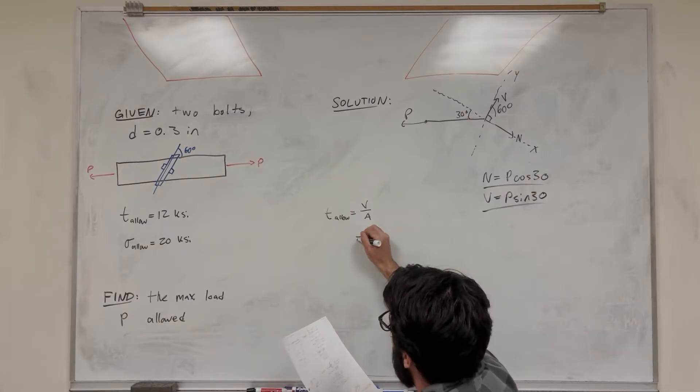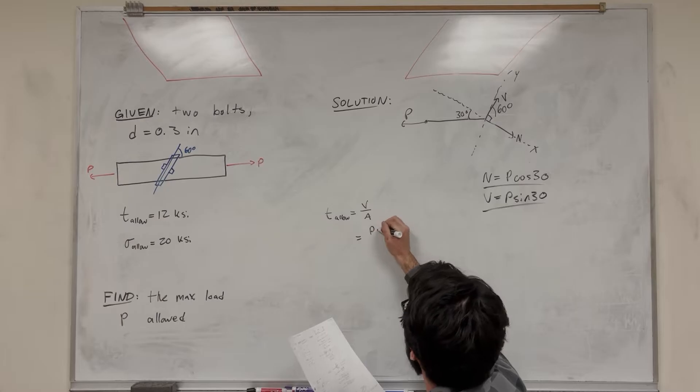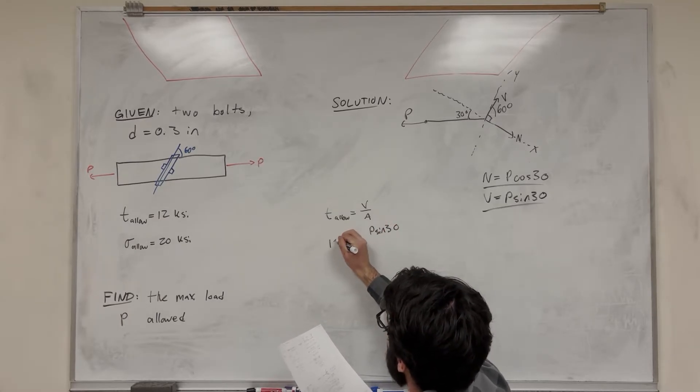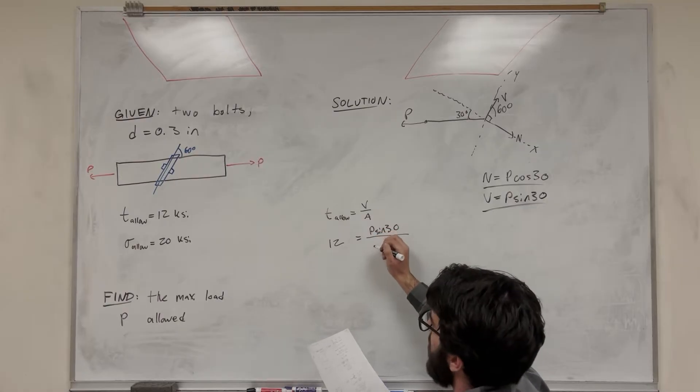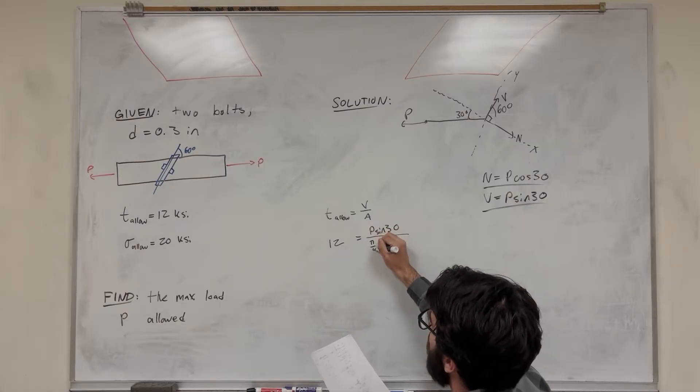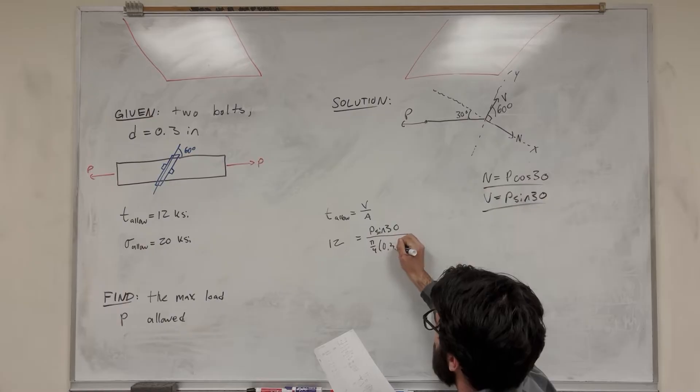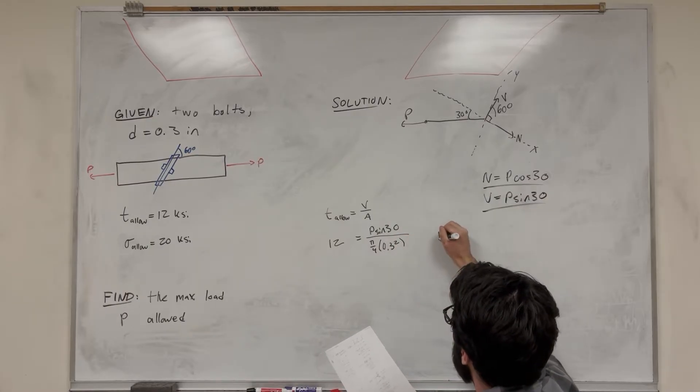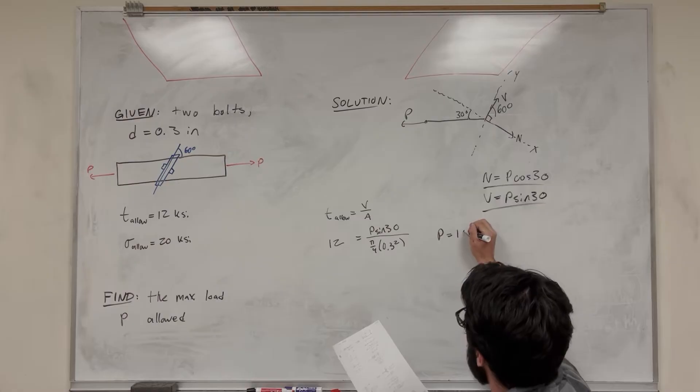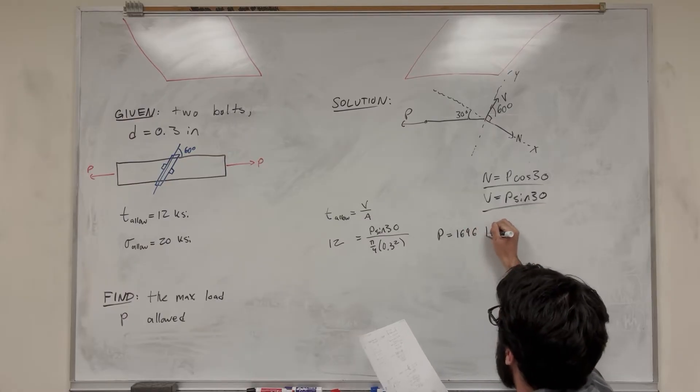So let's add these up. So we know the shear force is P sine of 30. We know tau allow is 12 ksi. And our area is going to be pi over 4 diameter squared, so 0.3 squared. And you're going to get that here, P is equal to 1696 pounds.